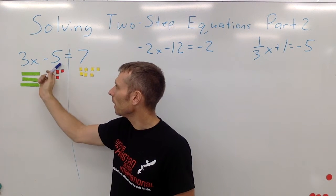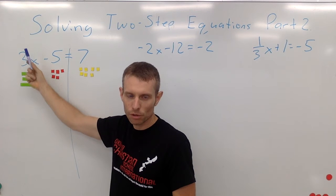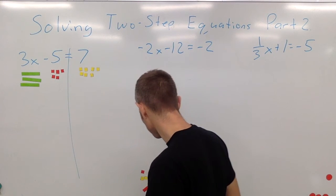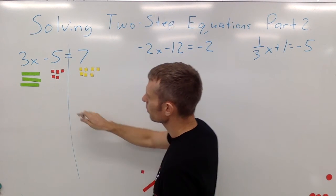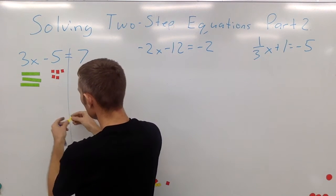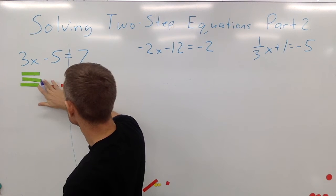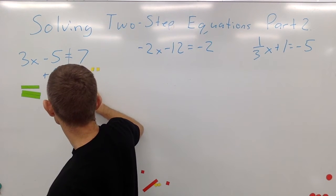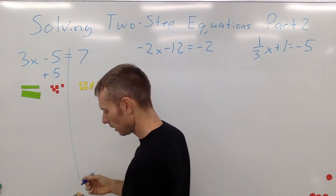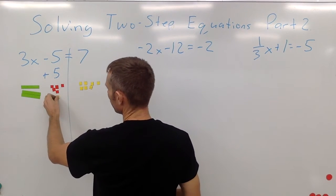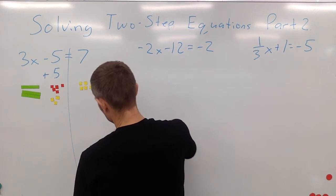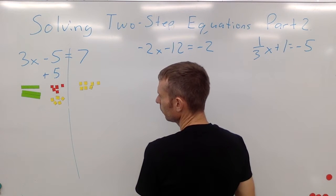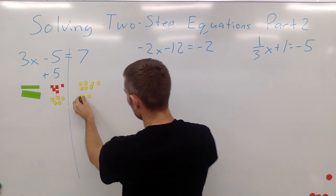Right now x is being multiplied by 3, and then 5 is being subtracted from that total. To undo that, we work backwards — we first need to add 5 to get 3x by itself. The inverse operation of minus 5 is plus 5, so we're going to add 5 to both sides. Negative 5 and positive 5 cancel each other out.